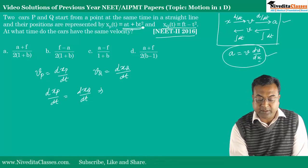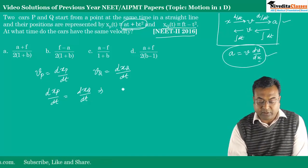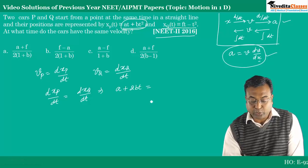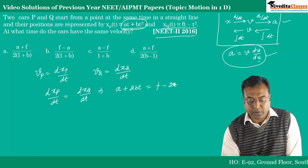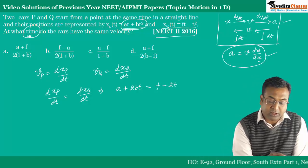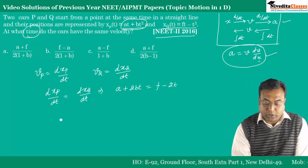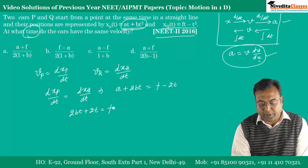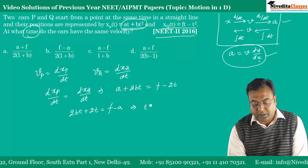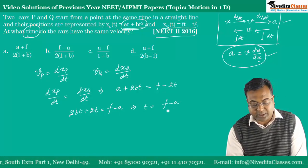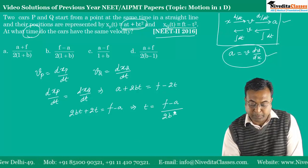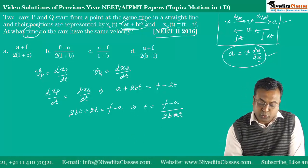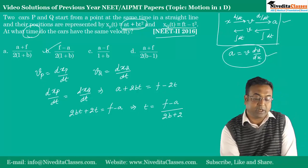Taking the derivative of x_P with respect to t gives a + 2bt. Taking the derivative of x_Q gives f - 2t. We need to find the time t, so we collect the t terms on one side: 2bt + 2t = f - a. Therefore, t = (f - a) / (2b + 2). So the correct answer is option B.